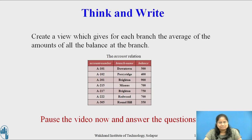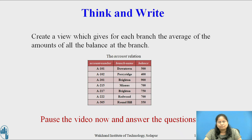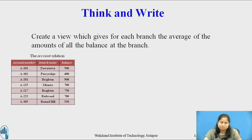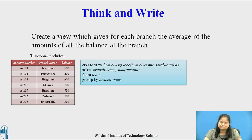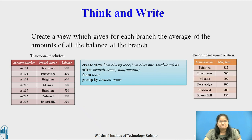So, until now we have considered the view definition. Now pause this video, reflect on the following question for a minute or two, write your response, and then restart the video. The question is: create a view that gives, for each branch, the average amount of all balances at that branch. The view definition is: CREATE VIEW branch_average_account(branch_name, total_loan) AS SELECT branch_name, SUM(amount) FROM loan GROUP BY branch_name. The result contains attributes branch_name and total_loan as shown on the slide.